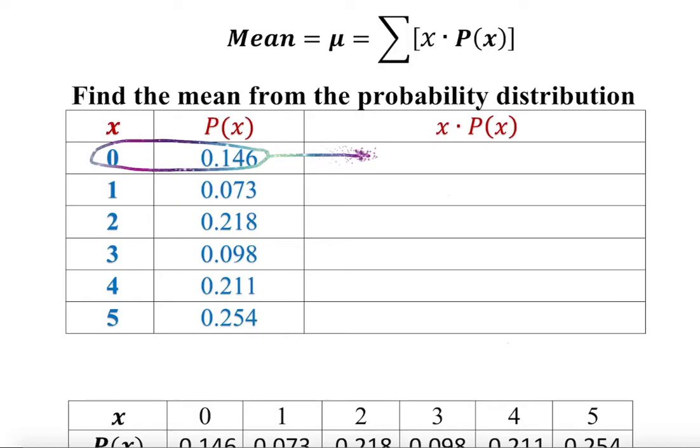0 times anything is 0. The next one, 1 times 0.073 is 0.073. Then 2 times 0.218 should be 0.436.